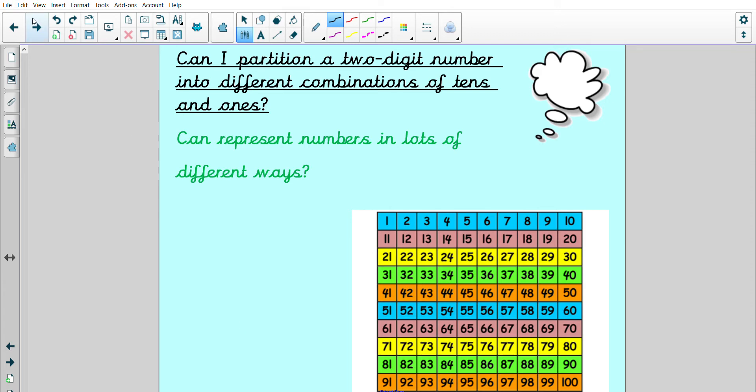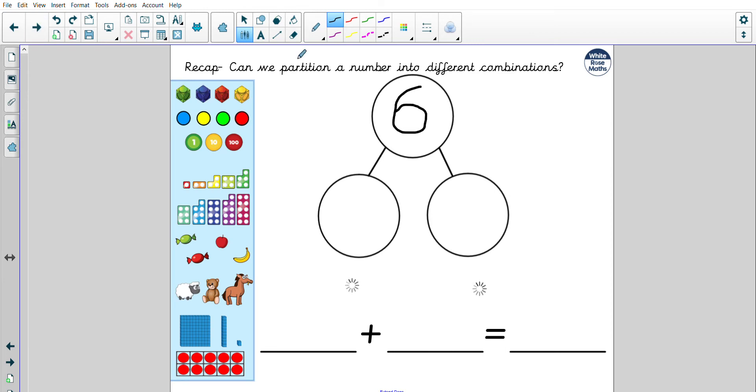Going back to yesterday's activity, here we have what we call a part-whole model. The whole is number 6, and it's been broken up into two parts. Those parts are 2 and 4, so I could say as a number sentence that 2 add 4 makes 6. I've used the two parts to make the number 6.